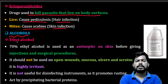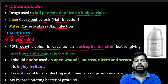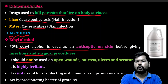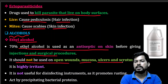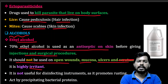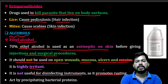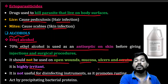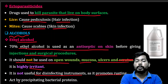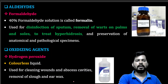Alcohols: 70% ethanol is used as an antiseptic on skin before giving injections and during surgical procedures. It should not be used on open wounds, mucosa, ulcers, or the scrotum. It is not useful for disinfecting instruments because it promotes rusting. Ethanol acts by precipitating bacterial proteins, causing the killing of bacteria.